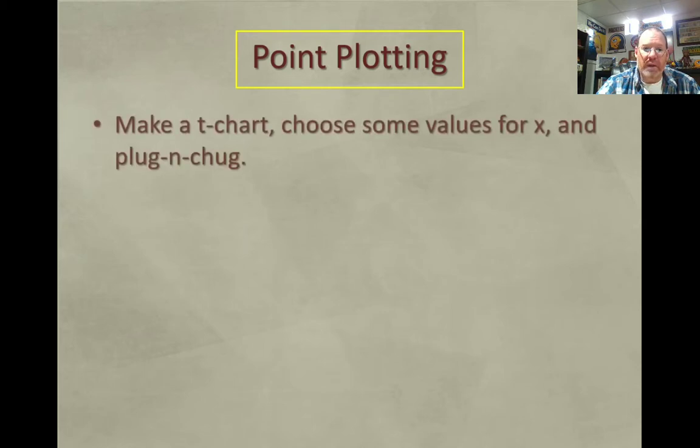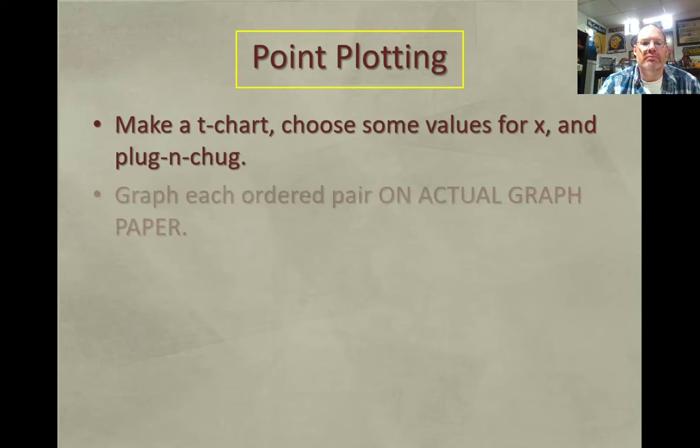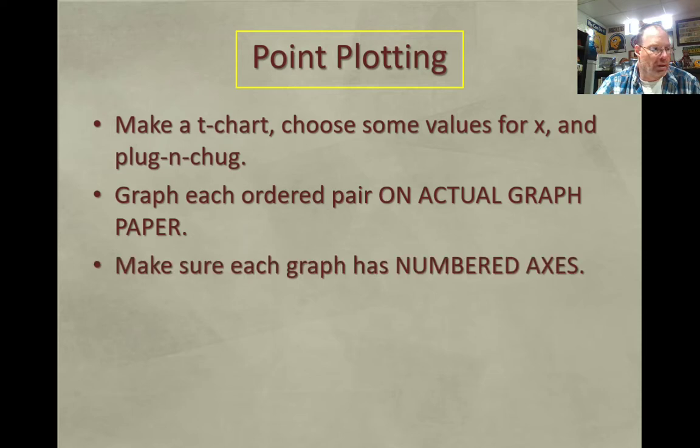So here's how you use point plotting. You're going to start by making a t-chart and you're going to choose some random values for x and then plug and chug to find out what the y value is. You're going to graph each ordered pair on actual graph paper. I do not want it on your own little handwritten thing. You have graph paper in class for a reason. You want to make sure that you number each axis, the x and the y. You don't have to number every single point, but you do have to spread it out, so maybe you go 2, 4, 6, 8, something like that.